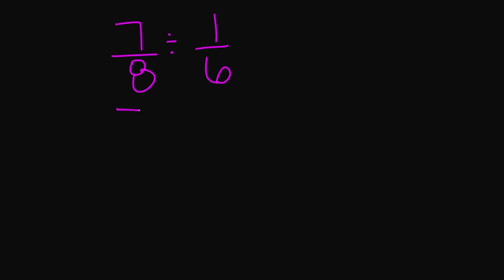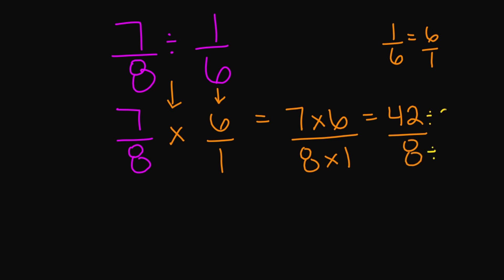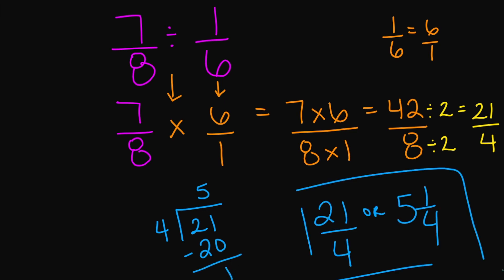Seven over eight divided by one over six. Seven over eight stays the same. Division changes to multiplication, and the reciprocal of one over six is six over one. Numerator: seven times six. Denominator: eight times one. Seven times six is 42, eight times one is eight. I can simplify 42 over eight because two goes into both: 42 divided by two is 21, eight divided by two is four. Since this is an improper fraction, let's convert: four goes into 21 five times. Four times five is 20. 21 minus 20 is one. This is your final answer: 21 over four, or five and one fourth.